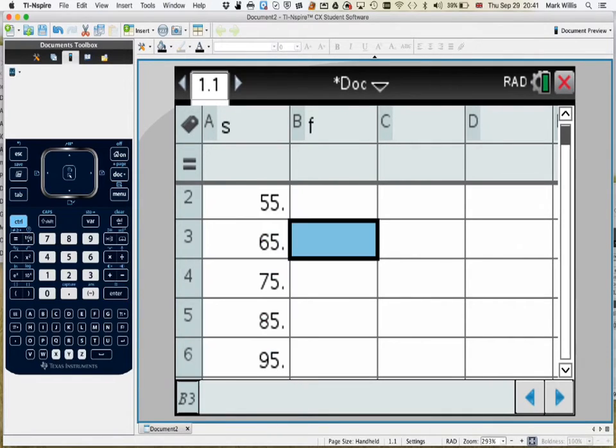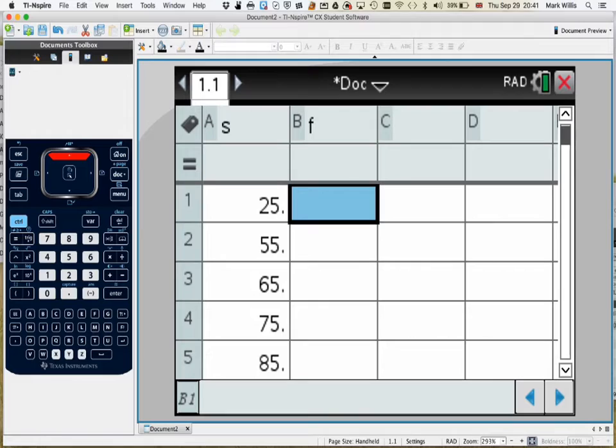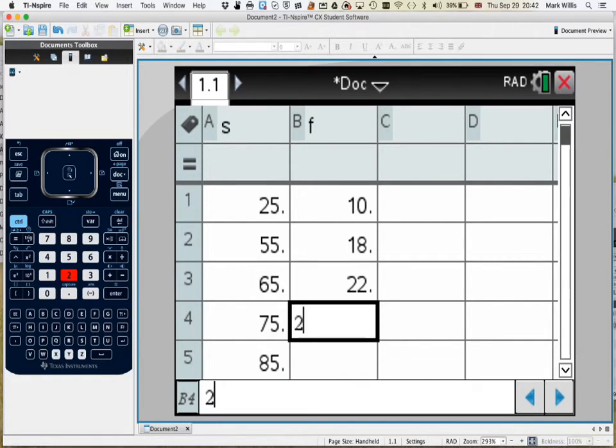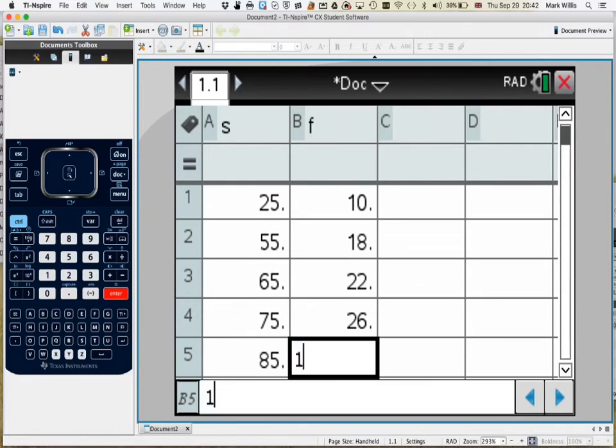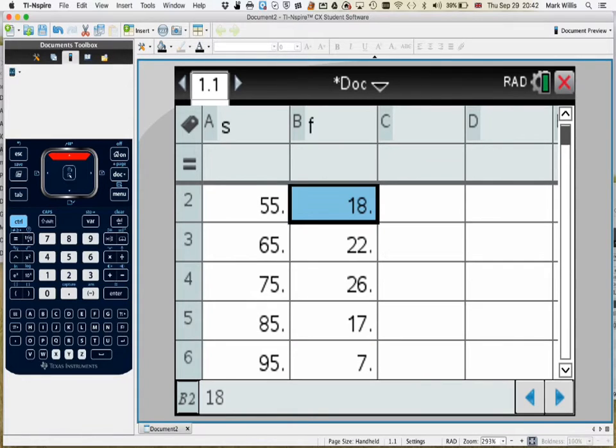Scroll back to the top. Put in the frequencies, which are 10, 18, 22, 26, 17, and 7. So they line up OK. Scroll to the top.